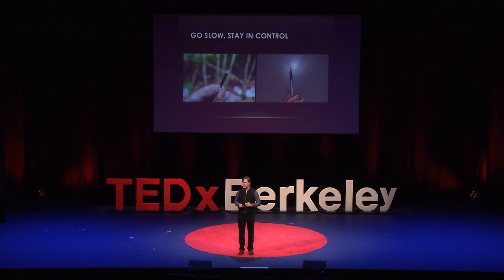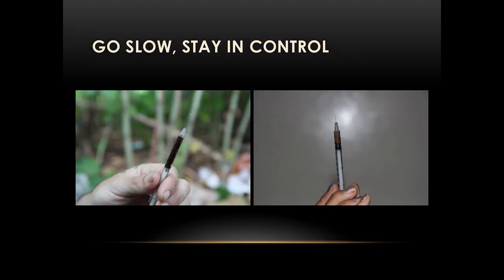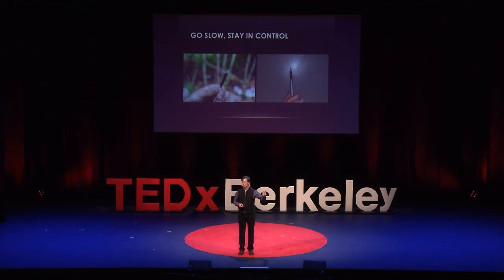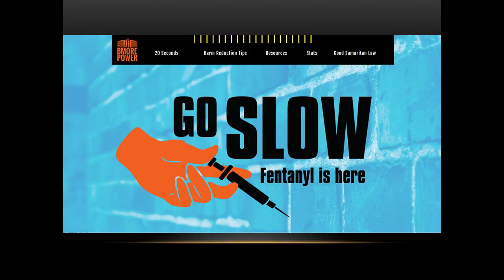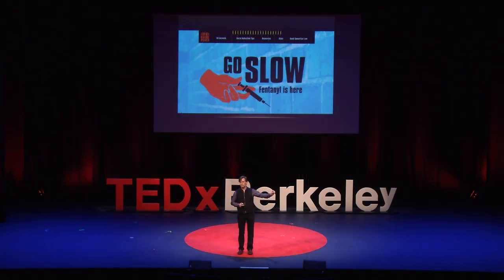We asked a whole bunch of other people what they do to stay safe, and they say: do a tester shot, half the volume, dilute the shot, go slow, stay in control. We liked this so much we wrote a paper: 'Toots, Tastes and Tester Shots: Harm Reduction Strategies in the Age of Fentanyl.' Go check it out. This is what Be More Power is doing with it — an advocacy group in Baltimore working with the Johns Hopkins communication team: 'Go slow. Fentanyl is here.' It's awareness and a single doable action in one. This is good public health messaging.